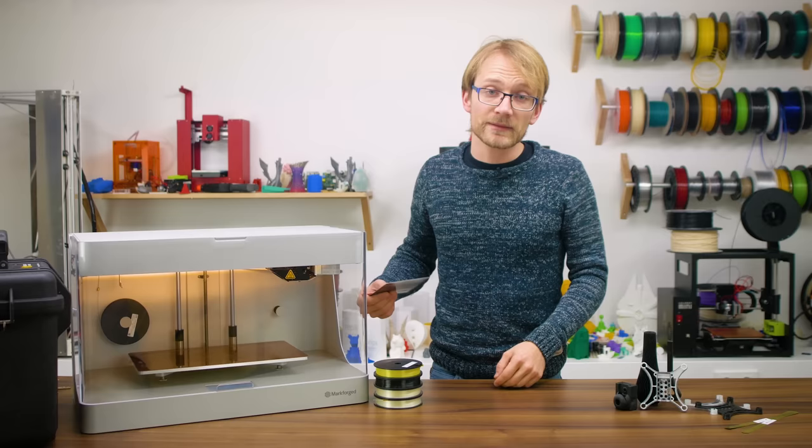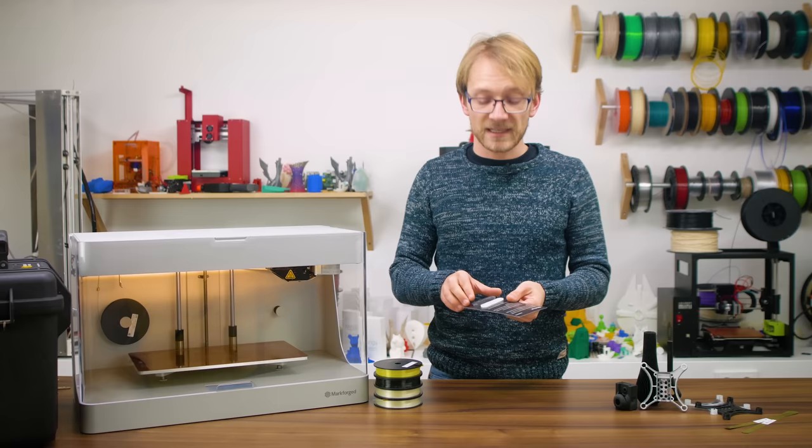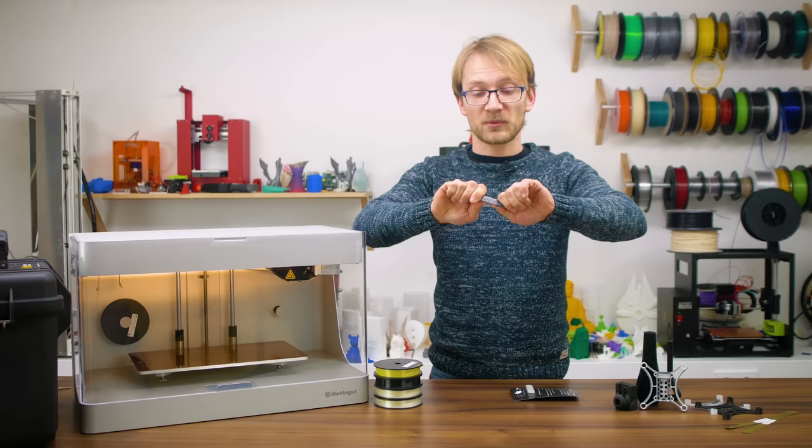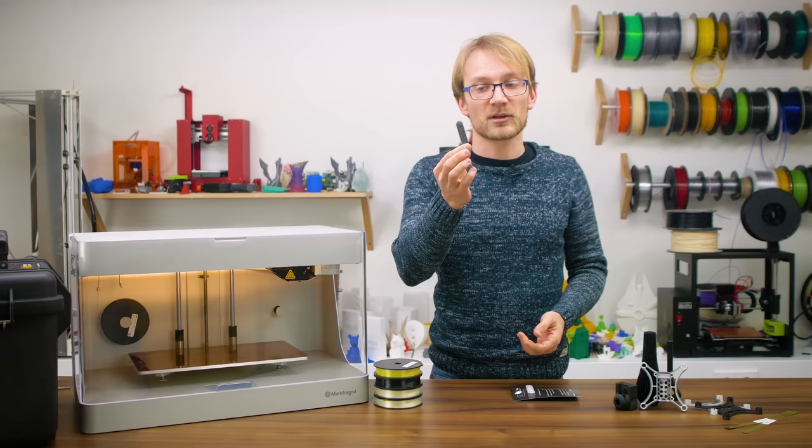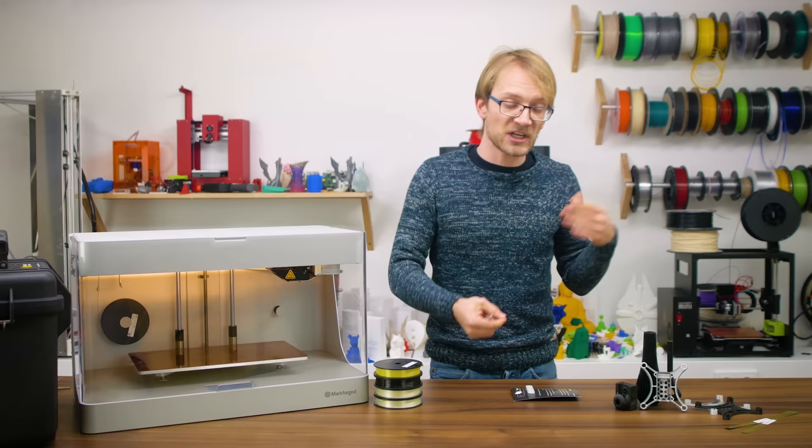In the live unboxing, I casually broke the sample print in half and then compared it to aluminum, and the force required to snap or permanently deform them felt very similar. This is a carbon fiber infill part. If you want to check out the full Filoween episode on the Onyx material and how it changes with the extra fiber, we can do that up here.